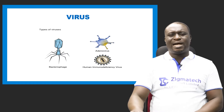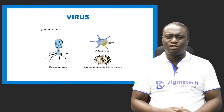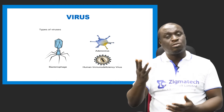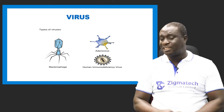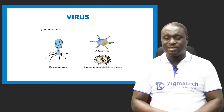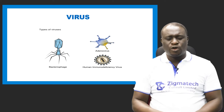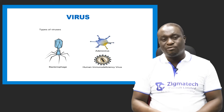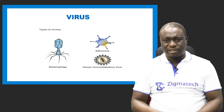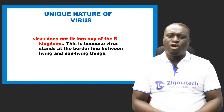Now we're going to look at an organism we refer to as a virus. There are different types of viruses — the bacteriophage, which feeds on bacteria; the adenovirus; the human immunodeficiency virus (HIV); the togavirus; the coronavirus; the picornaviruses; and so many others. Let's take a look at the unique nature of a virus.